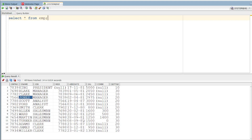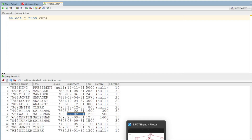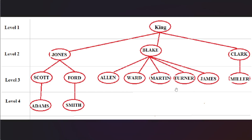If you have a table and understand the structure, I will prepare the diagram so it will be easy to follow. At level one we have King. At level two we have Jones, Blake, and Clark. Under Jones we have Scott and Ford, and under them Smith. This is how the employee hierarchy is built.